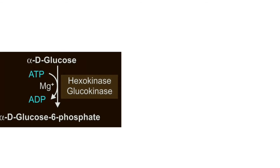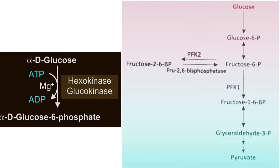When you look at glucokinase, it catalyzes the conversion of glucose to glucose 6-phosphate — simply, it phosphorylates glucose. That is the only function of glucokinase; there is no other function. So the polypeptide chain of glucokinase has only one activity.